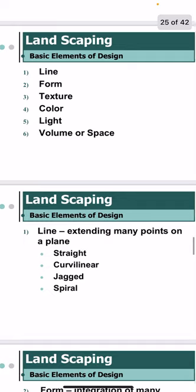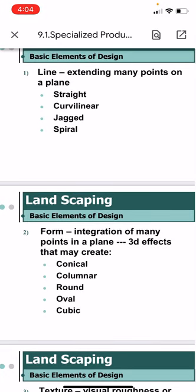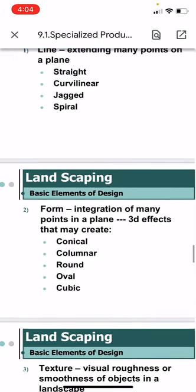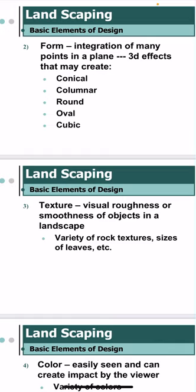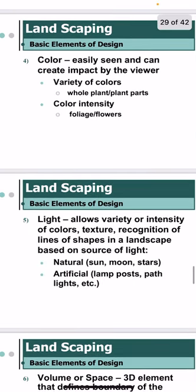Aside from the six principles, we also have six basic elements of design: line, form, texture, color, light, and volume or space. Line extends many points on a plane and can be straight, curvilinear, jagged, or spiral. Form is the integration of many points in a plane in 3D effects creating conical, columnar, round, oval, or cubic shapes. Texture is the visual roughness or smoothness of an object. Color is easily seen and creates impact using variety of colors and color intensity in foliage or flowers.